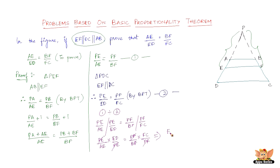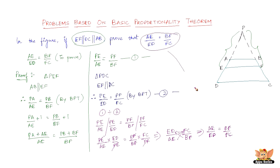After cancellation, we have ED by AE equals FC by BF. A simple cross multiplication gives us AE by ED equals BF by FC. Hence proved — AE by ED equals BF by FC.